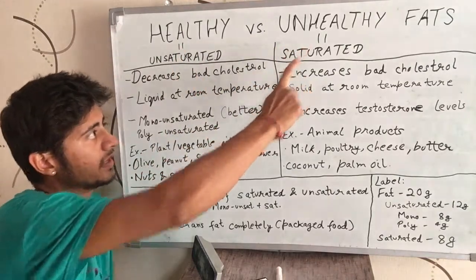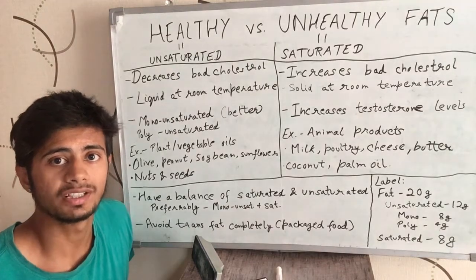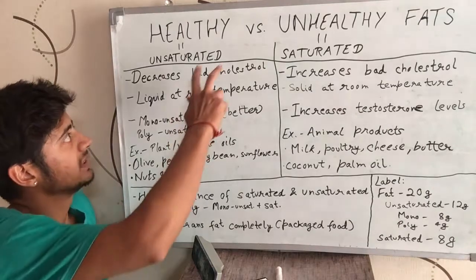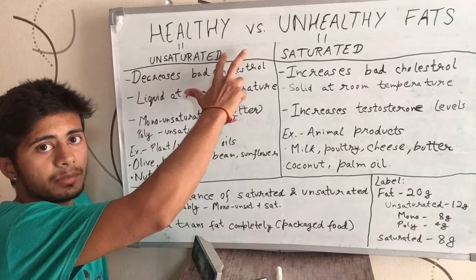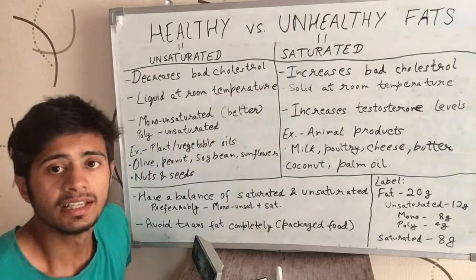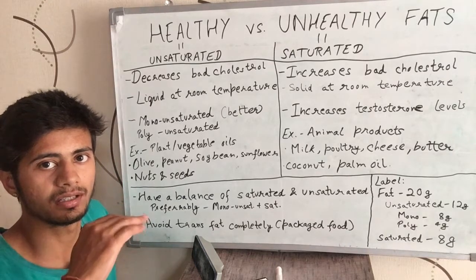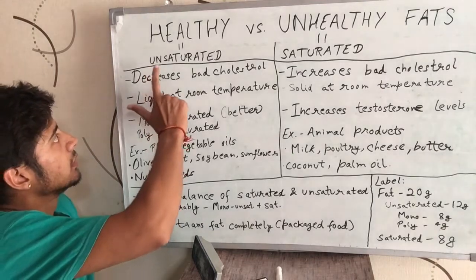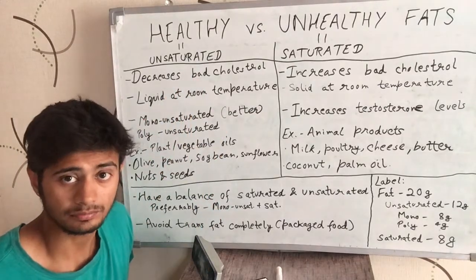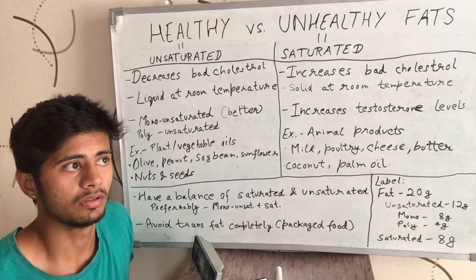Healthy fats are also called unsaturated fats, and unhealthy fats are also called saturated fats. These names come from their chemical structure — specifically the bonds they form. Fats that are unsaturated in their chemical structure are called healthy fats, while those that are saturated are called unhealthy fats. We won't go deep into the chemistry. Healthy or unsaturated fats are called healthy because they decrease the bad cholesterol in our body, while unhealthy fats increase bad cholesterol.